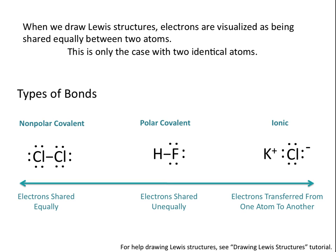In a polar covalent bond, such as the bond between HF, the electrons are shared unequally. Fluorine, being the more electronegative atom, has a much greater pull on the electrons in the hydrogen-fluorine bond than hydrogen does. Whereas potassium chloride is an example of an ionic bond, where essentially the electron from potassium is transferred to chlorine, forming two ions.